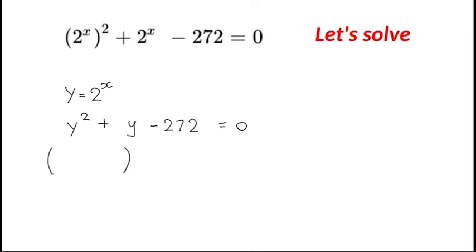Let's factorize. So the two numbers which will multiply to 272 and have a difference of 1 will be minus 16 and plus 17. You can use the quadratic formula also at this stage.